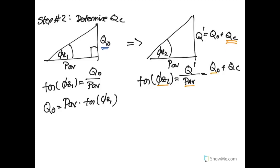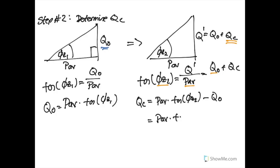We can rearrange to say that Qc equals the average power times the tangent of φZ2 minus Q₀. And substituting Q₀ equals the average power times the tangent of φZ1, we arrive at our final expression for Qc.